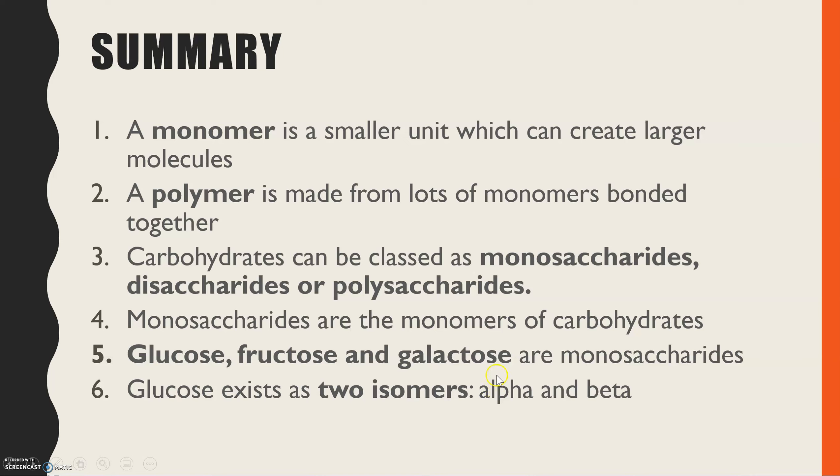So in summary, a monomer is a small unit which can create larger molecules. A polymer is made from lots of monomers bonded together. The carbohydrates can be classed as monosaccharides, disaccharides, or polysaccharides. Today we looked at the monosaccharides, and those are the monomers of carbohydrates. And the three that you need to know are glucose, fructose, and galactose. You only need to know glucose in detail, and that exists as two isomers, alpha and beta.